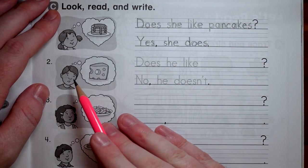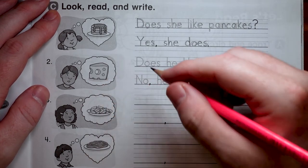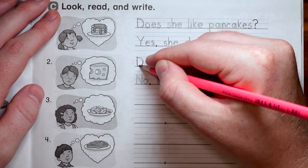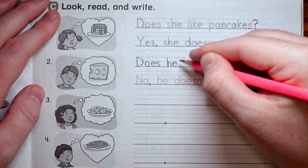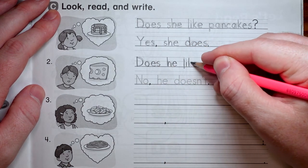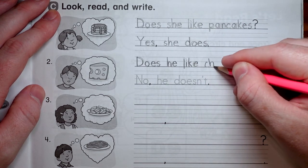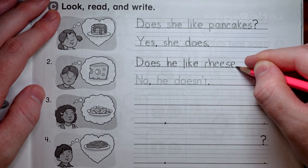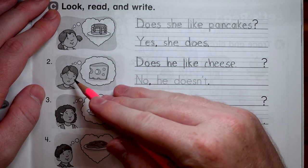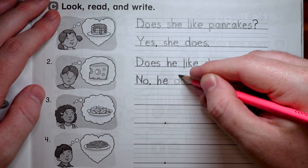Okay. Next one is this boy. So say he. Does he like, that's cheese. So let's put cheese in there. Does he like space? And then we'll put cheese. C-H-E-E-S-E. Does he like cheese? He's frowning. So no. No. He doesn't.